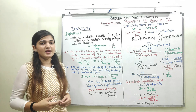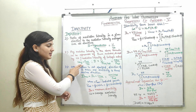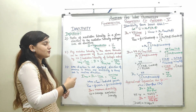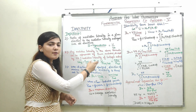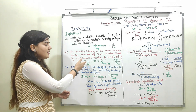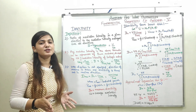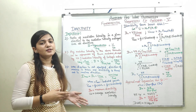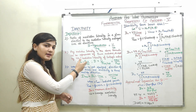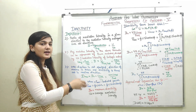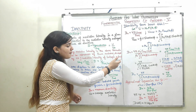For the second definition, we take the average radiation intensity to be P_rad divided by 4π. This formula was derived for the isotropic antenna in the previous video. For an isotropic antenna, the radiation intensity is given by radiated power divided by 4π, since the total solid angle is 4π. Substituting the average radiation intensity, we get D equal to 4πU upon P_rad.